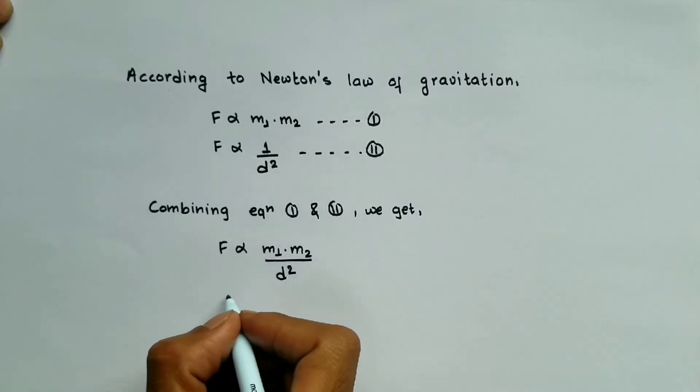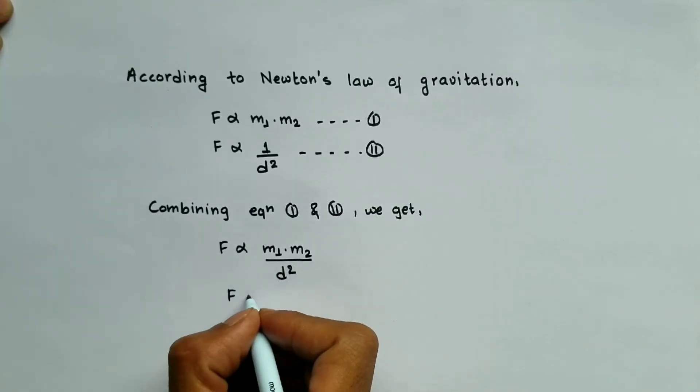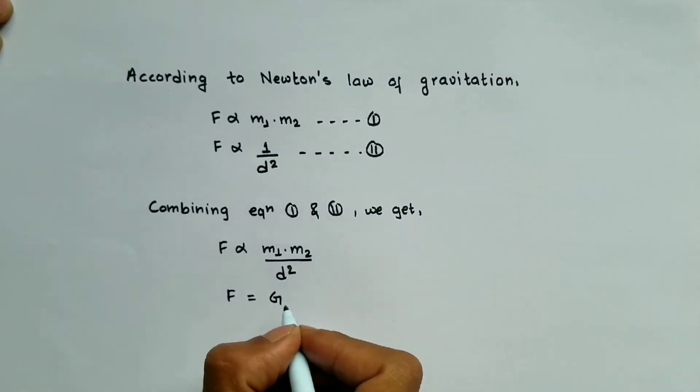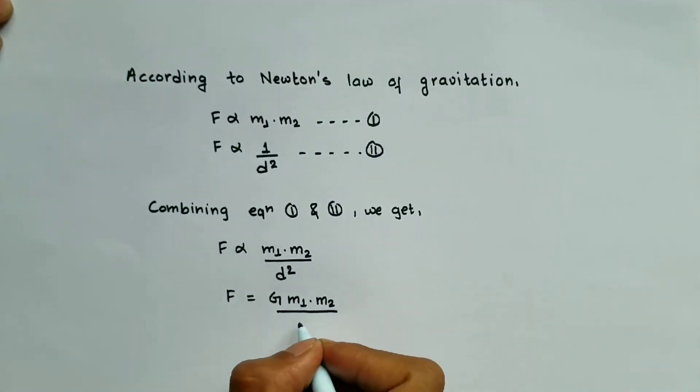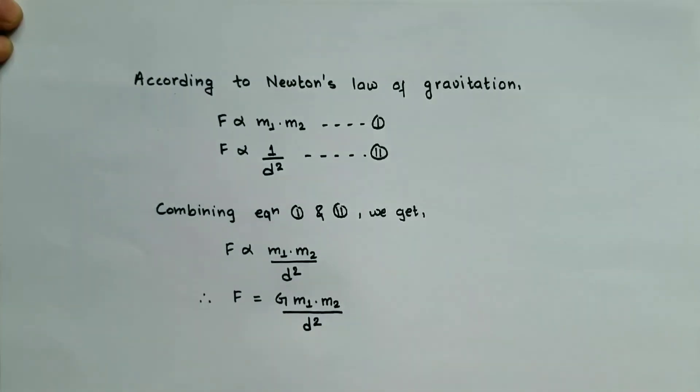Whenever we remove the proportionality symbol and replace it with equals, we need to add a proportionality constant. In this case that is capital G, and we write the remaining things as is and we get our formula.